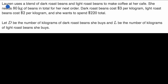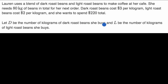Lauren uses a blend of dark roast beans and light roast beans to make coffee at her cafe. She needs 80 kilograms of beans in total for her next order. Dark roast beans cost $3 per kilogram. Light roast beans cost $2 per kilogram. And she wants to spend $220 total. Let D be the number of kilograms of dark roast beans she buys, and L be the number of kilograms of light roast beans she buys.